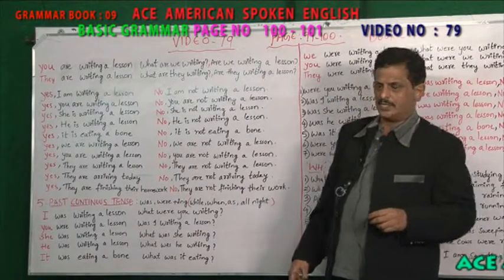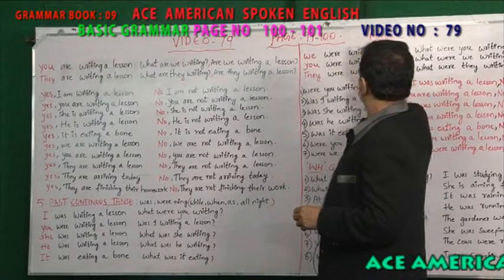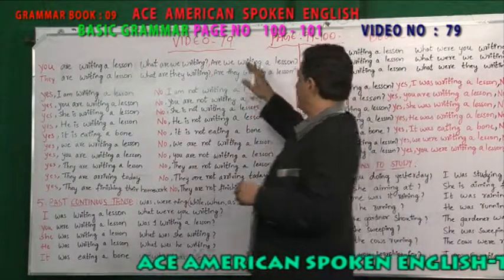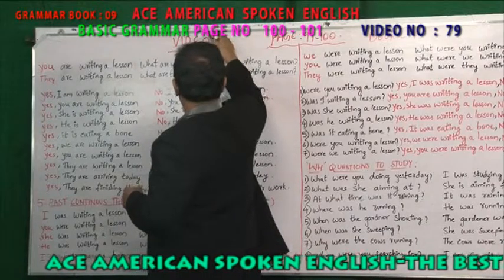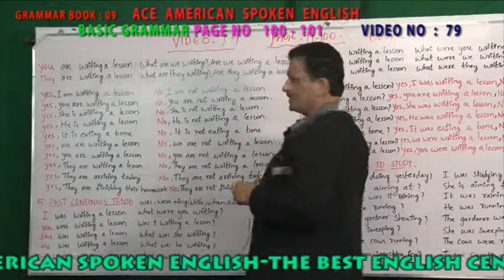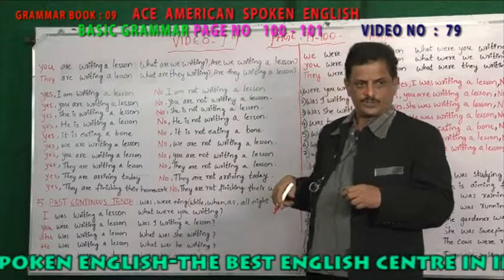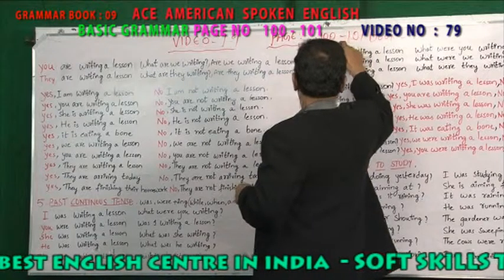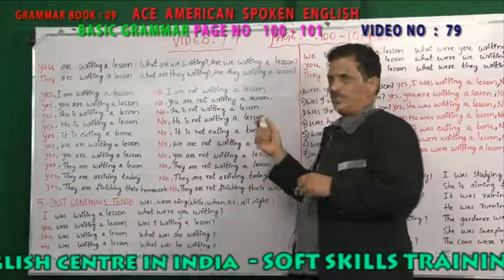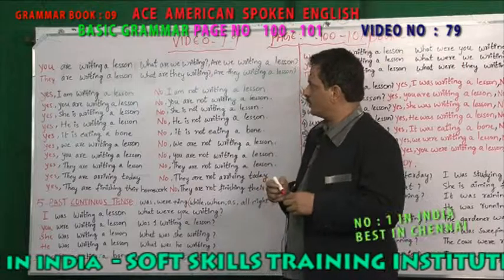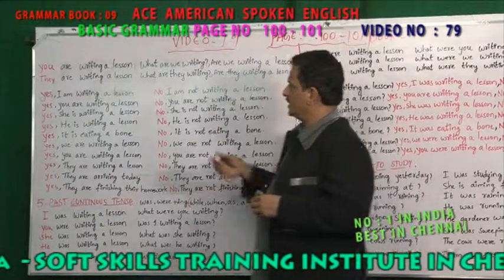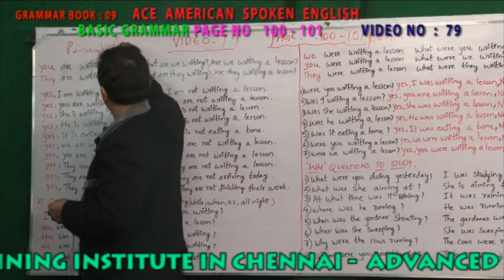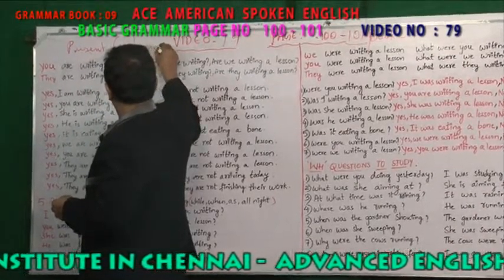Dear friends, welcome to his American English Center. This is book number 9, video number 79, and the page number is 101 to 201. Today we are reviewing present continuous tense.